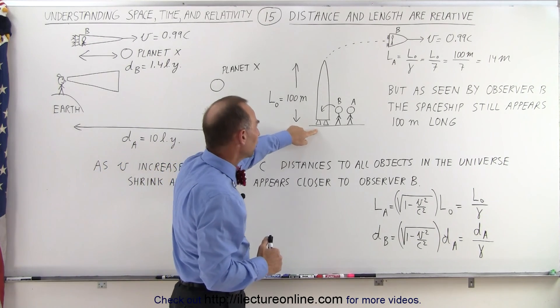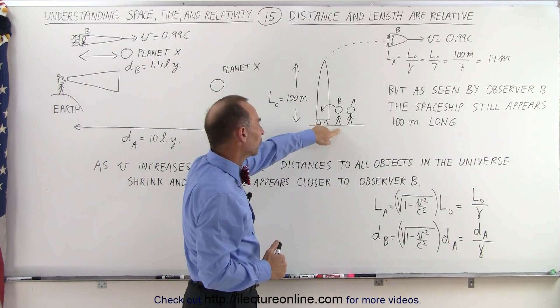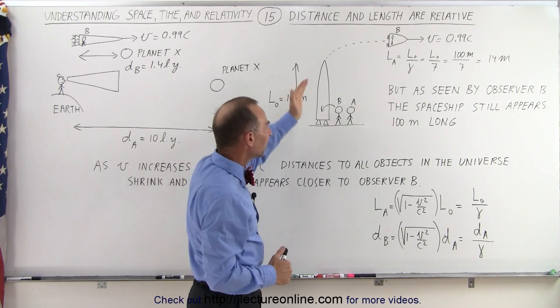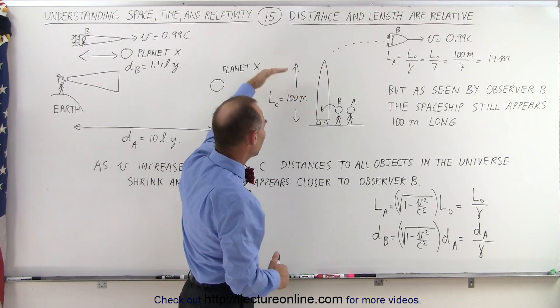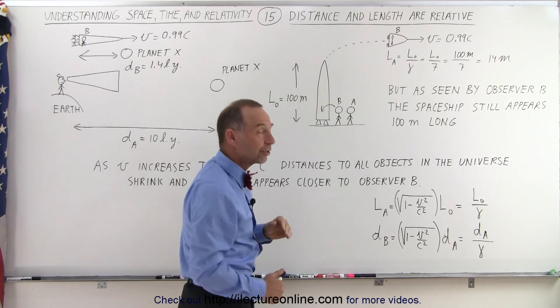When the spaceship is situated on the Earth, ready to take off, and Observer B is going to enter into the spaceship and take off on a long voyage at a very high speed, the spaceship has an original length of 100 meters.